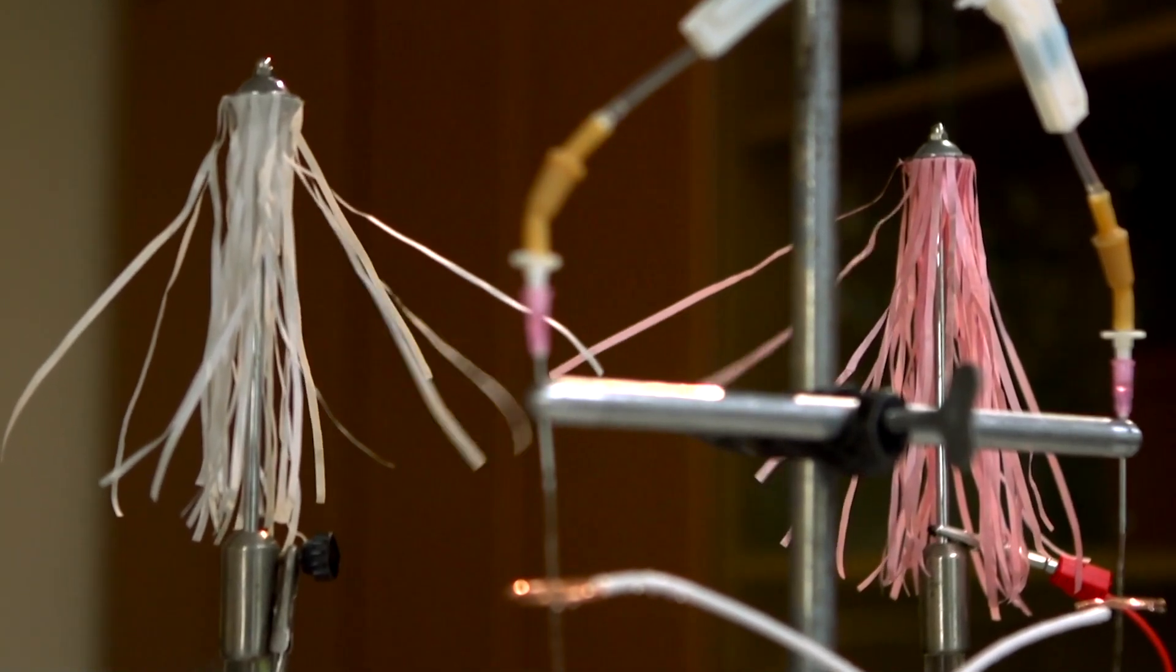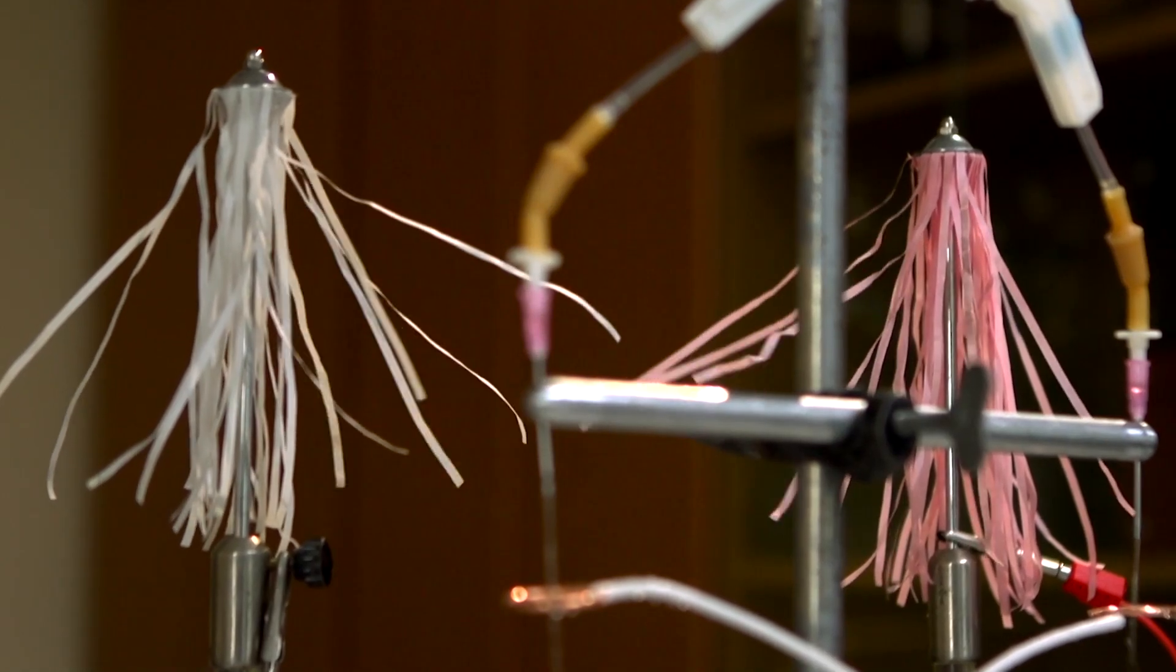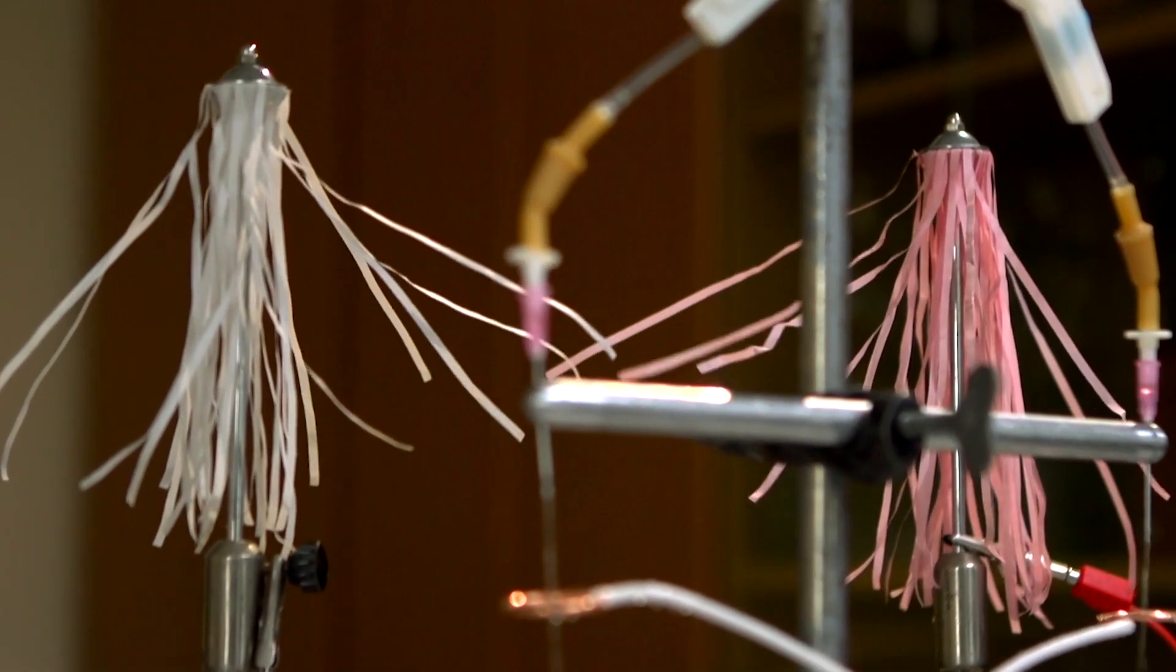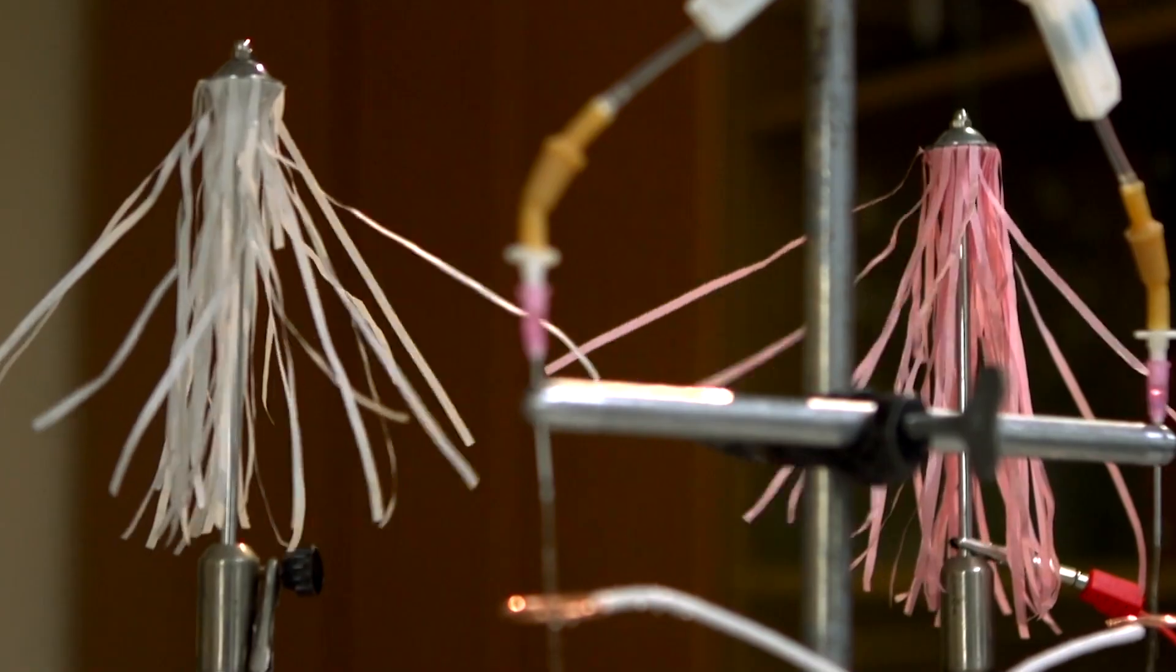And small streams of water generate a current. Weak, but noticeable. If the stripes are not impressive, look at this. We replace them with metal rods, and a spark appears among them.